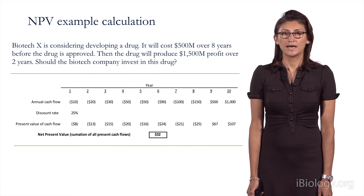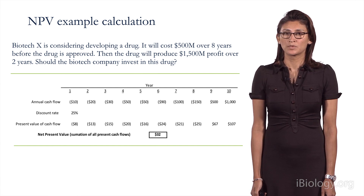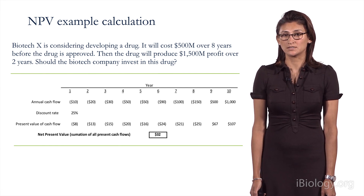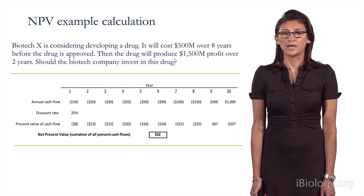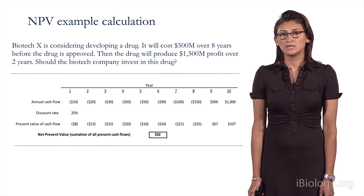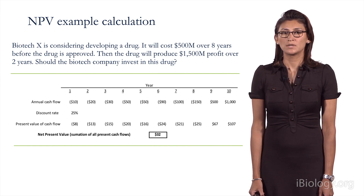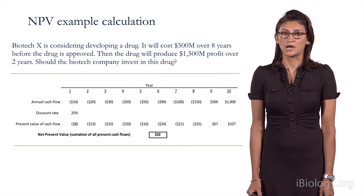In this example, Biotech X is considering developing a drug. It would cost $500 million over eight years before the drug is approved. Once approved, the drug will produce $1.5 billion in profit over two years. Here you see all the annual cash flows laid out from year 1 to 10 — those are the future values. The discount rate selected here is 25%, and using the previous equation, you can see those discounted to present value today. Looking out at year 10, $107 million in present value is worth quite a bit less than the $1 billion future value in year 10. The net present value is the summation of all those cash flows in present terms, and it equals $32 million.